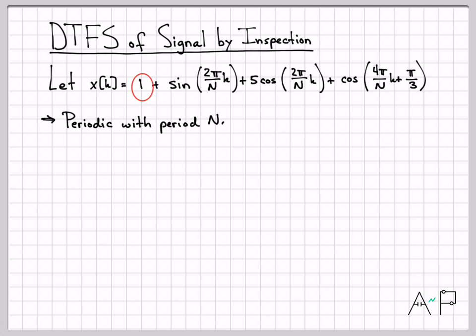The constant doesn't bother us because constants are periodic with a trivial period — they repeat every one sample in time. Now let's find the DTFS coefficients using the inspection technique, which means using identities to directly manipulate the original signal into a weighted combination of complex exponentials at the fundamental frequency or its multiples.